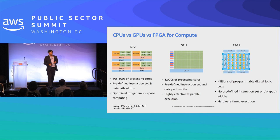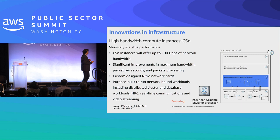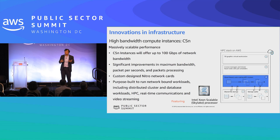We are also enhancing processing capabilities. For example, the Intel scalable processor has 28 cores with enhanced per-core performance. We also started looking at innovation as part of infrastructure. For example, C5 and C5N instances will offer roughly about 100 gigabits per second of network bandwidth. This is a huge advancement happening on the networking side.